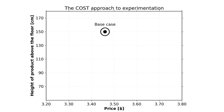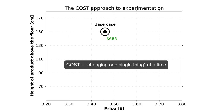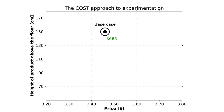Currently, the product is priced at $3.46 and is displayed at 1.5 meters or 150 centimeters above the ground. They make a profit of $665 at these conditions, but would like to increase it. The standard approach is to vary one factor at a time — also called changing one single thing, or COST.